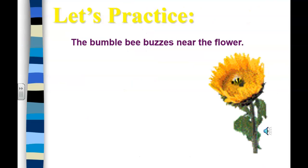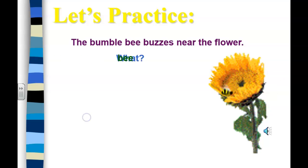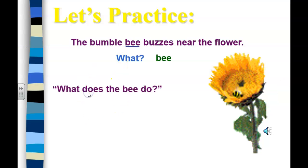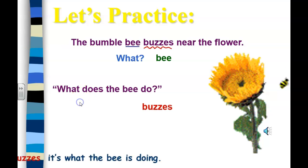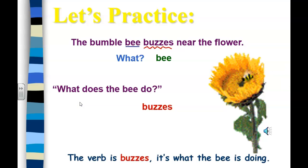'The bumblebee buzzes near the flower.' What is the sentence about? The bee. What does the bee do? It buzzes. Buzzes is the verb.